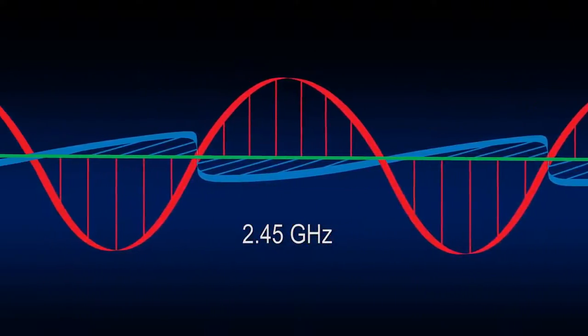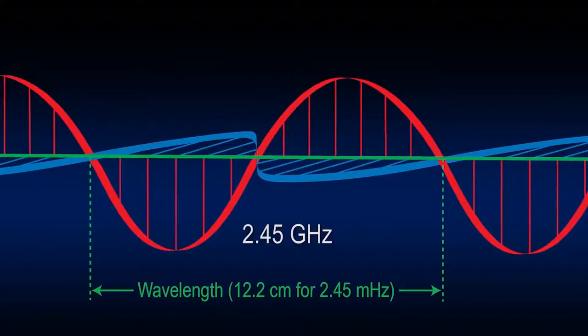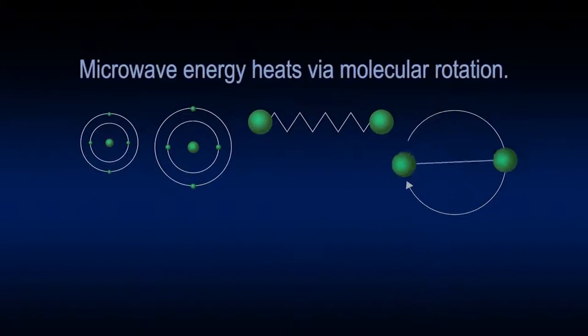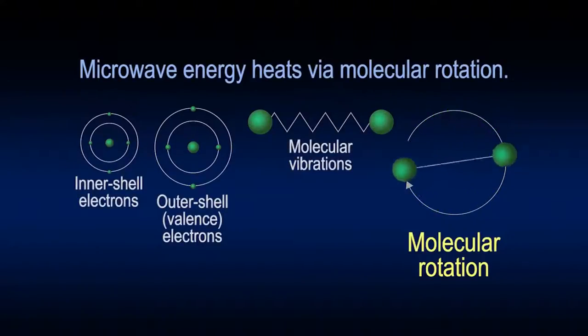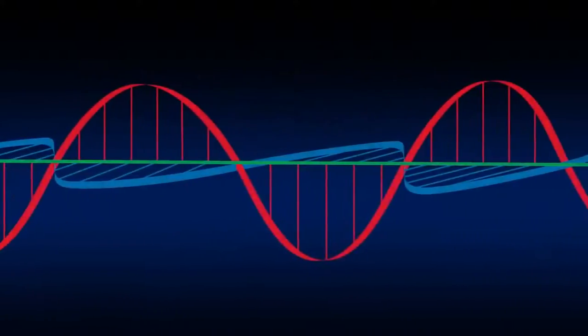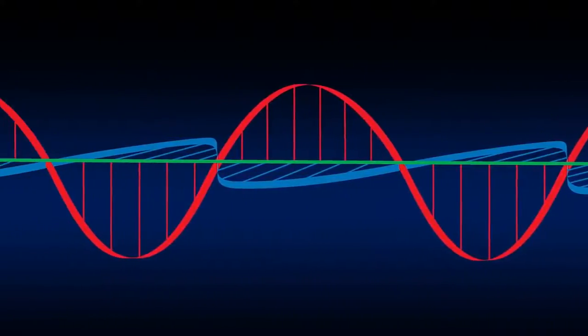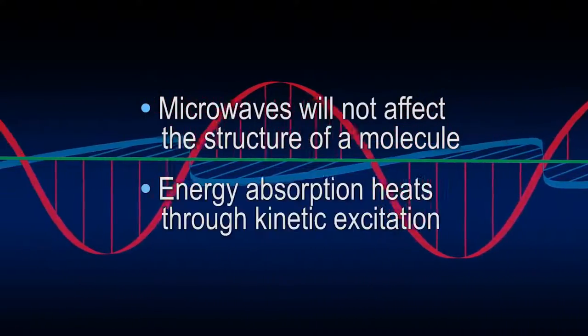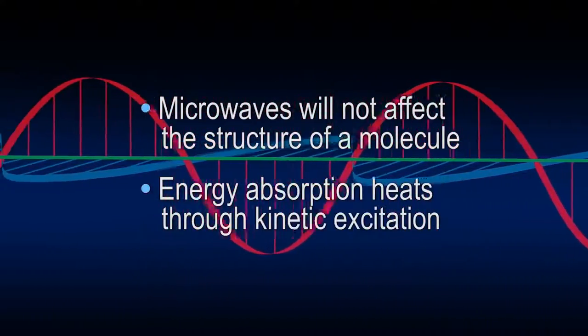CEM instruments use microwave energy with a frequency of 2.45 gigahertz. This frequency most efficiently heats general laboratory scale samples. A common early misconception about microwave energy is that it can make or break chemical bonds. But microwave photons are low energy sources and are comparatively very low in energy relative to the energy required for molecular bonding. Microwaves only induce molecular rotation and do not affect the structure of a molecule. Energy absorption heats purely through kinetic excitation.